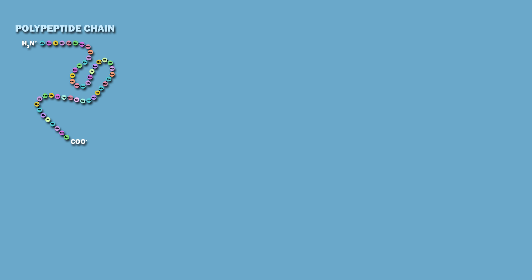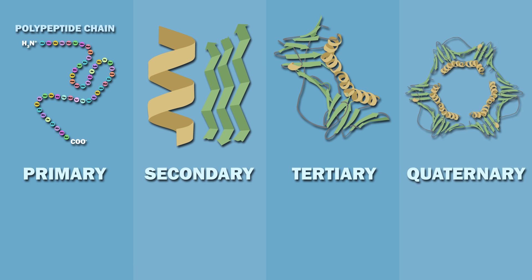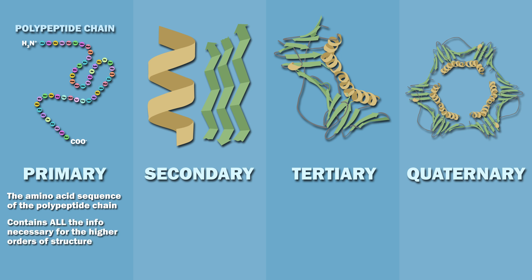Protein structure can be described in terms of four levels of organization: primary, secondary, tertiary, and quaternary structure. The primary structure is simply the amino acid sequence of the polypeptide chain, and it is important to remember that this sequence contains all the information necessary for the higher orders of structure.